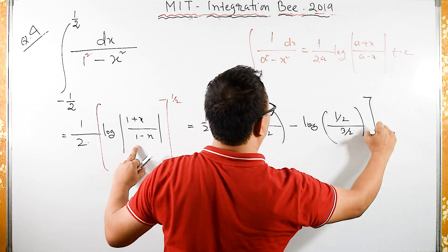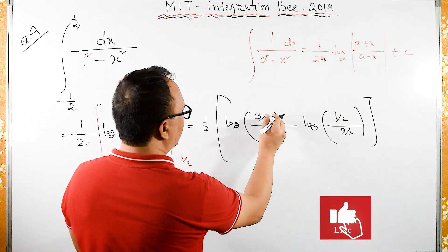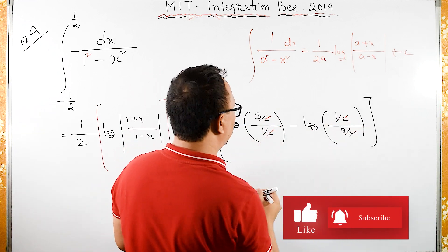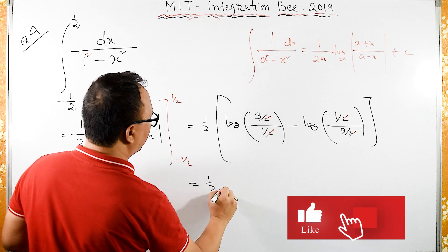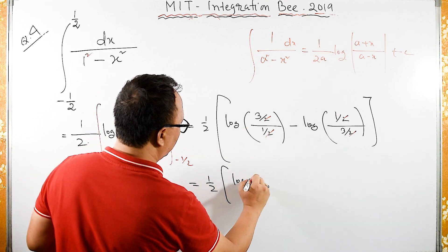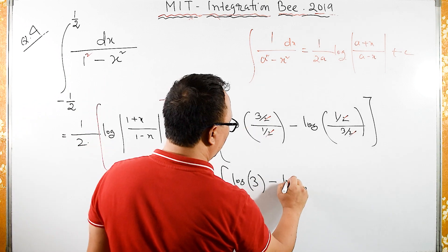Here 3 by 2 and these 2 and these 2 gets cancelled, these 2, these 2 gets cancelled. We have equals to half and log of 3 log of